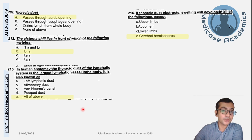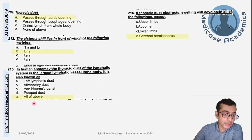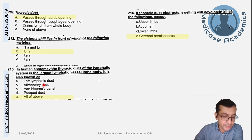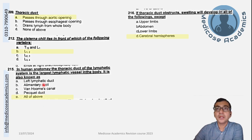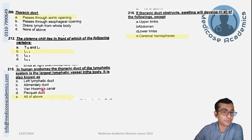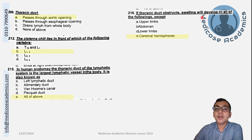As a note on anatomy: the thoracic duct of the lymphatic system has alternate names. It is called the left lymphatic duct, and also the alimentary duct, because it contains lymphatics from the gut carrying fats and other substances from digestion. If the thoracic duct is obstructed, lymphedema will develop in all regions except the upper limbs, abdomen, and lower limbs — it will not develop in the cerebral hemisphere because they do not have lymphatics of their own.